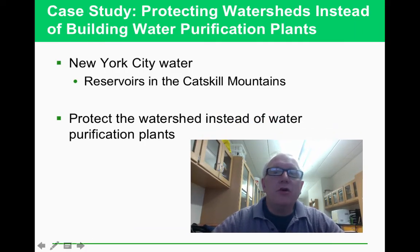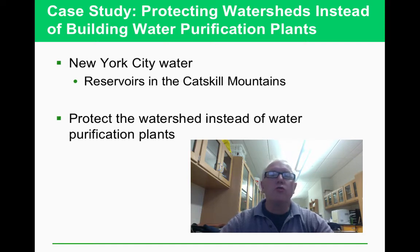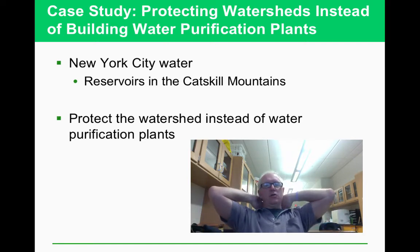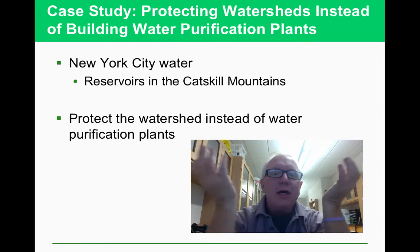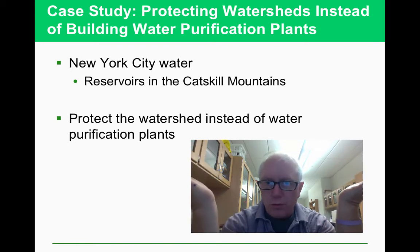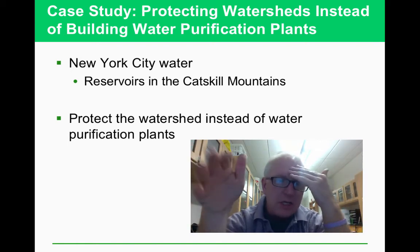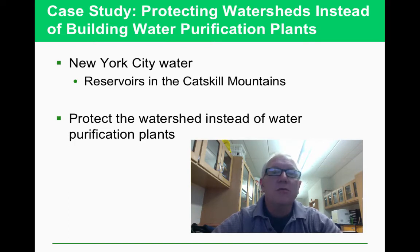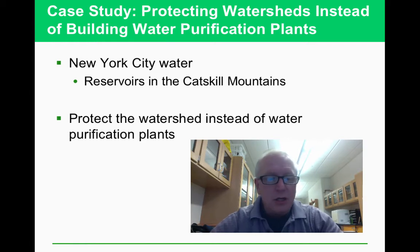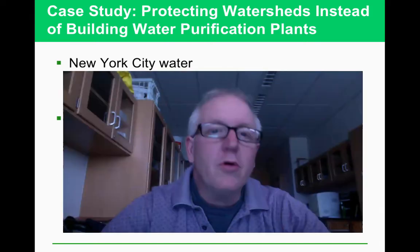Nature can also purify water. Watersheds and wetlands filter water naturally as it passes through them. New York City's drinking water comes from reservoirs in the Catskill Mountains and flows by gravity through Westchester County. The question is whether to build water purification plants or maintain the watershed itself — the natural approach offers additional environmental benefits.